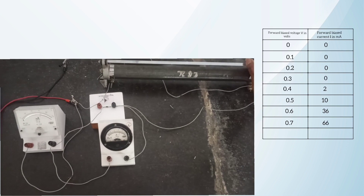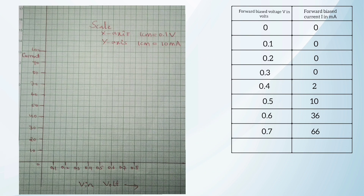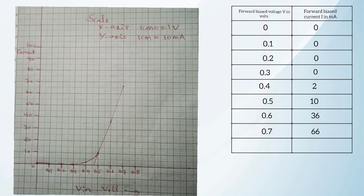Now plotting the graph on the basis of these readings, we can observe that from 0.4 V the current suddenly starts increasing. So we can observe that our cut-in voltage is between 0.4 and 0.5 V. After plotting the points we get a graph, and we can say that our cut-in voltage is 0.46 volt.